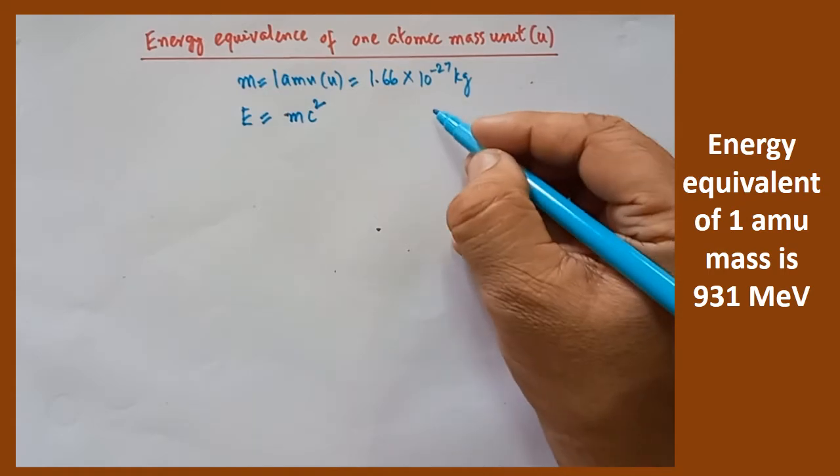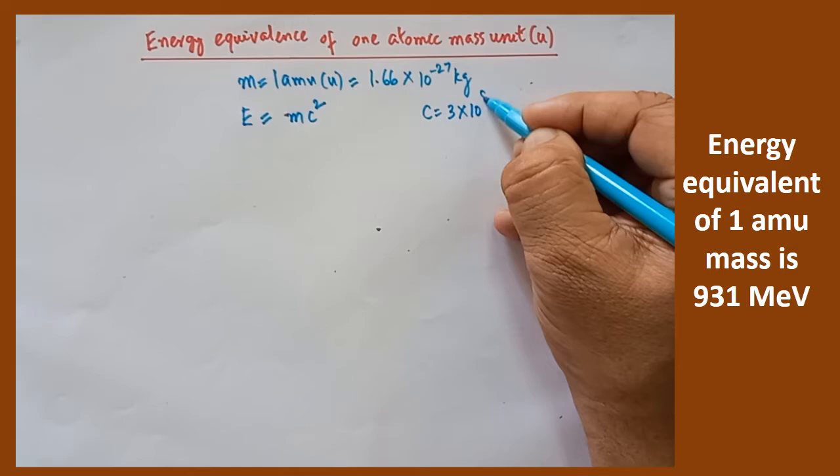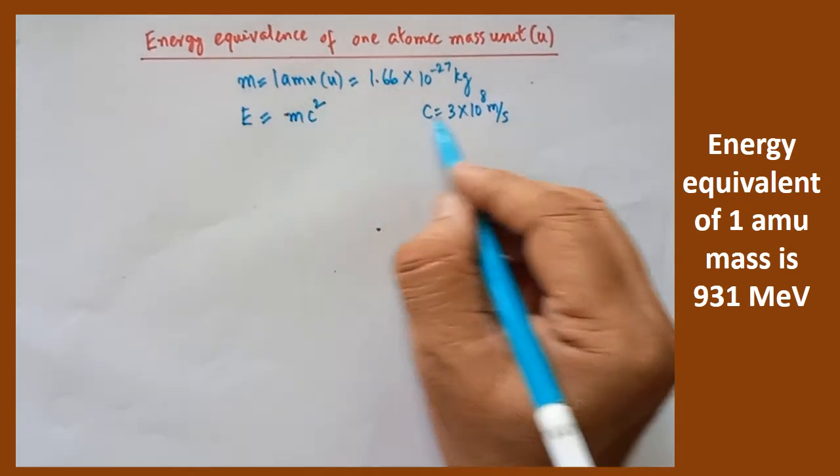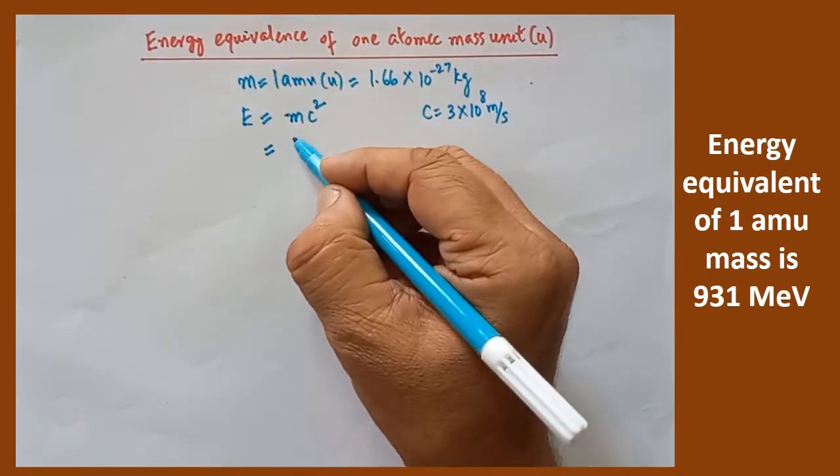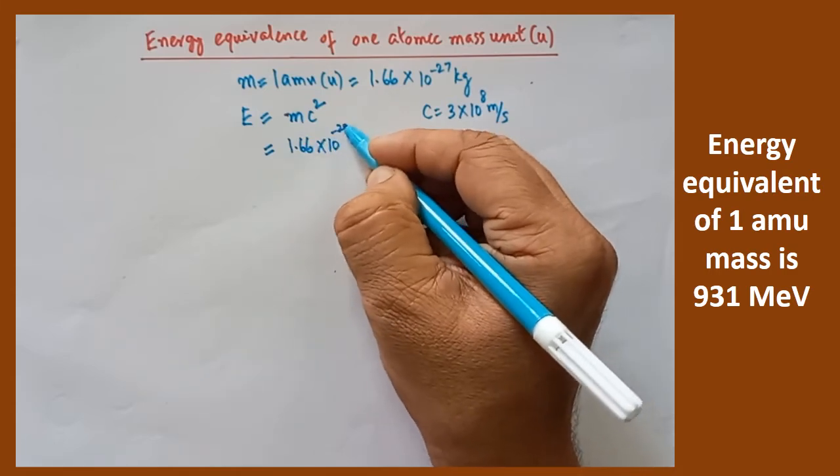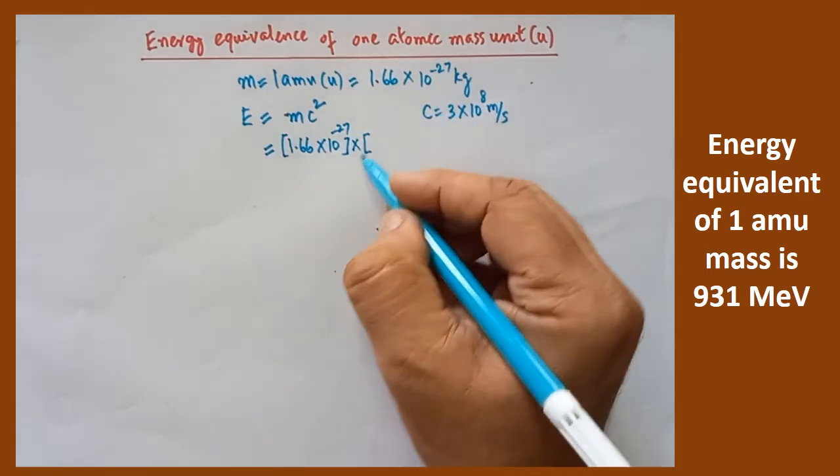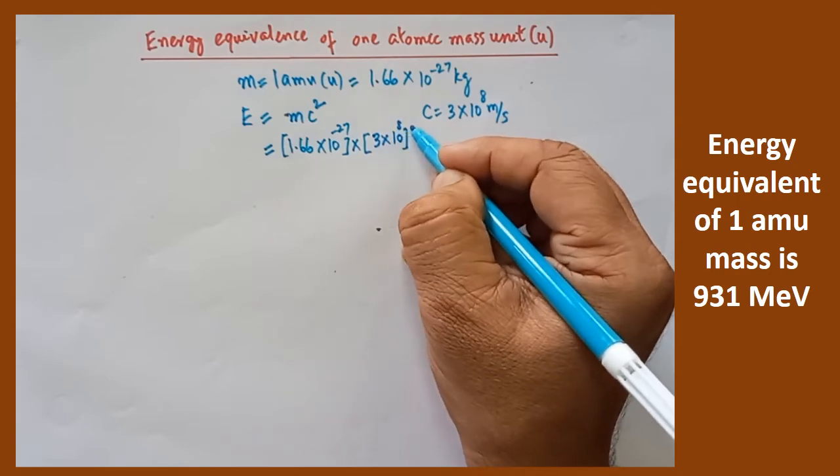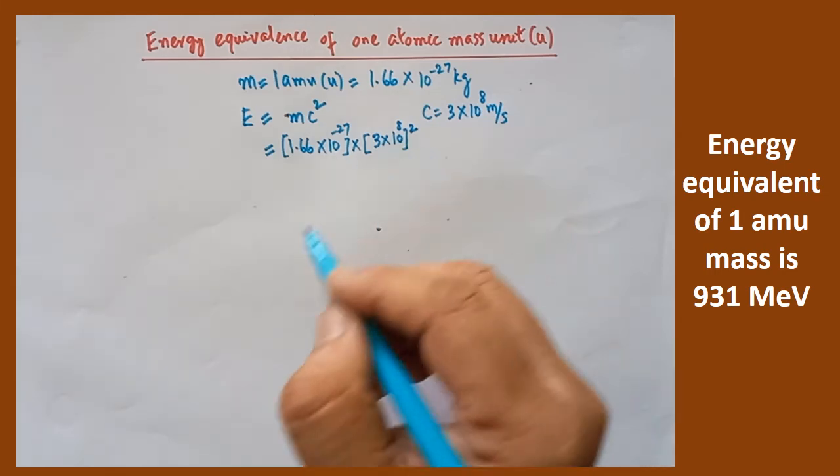We know the value of C. The value of C is speed of light, that is nothing but 3 into 10 to the power of 8 meter per second. Now substitute this mass value and speed of light, you will get the answer 1.66 into 10 to the power of minus 27, that can be written within the bracket into speed of light value is 3 into 10 to the power of 8 power of square. So both are substituted.